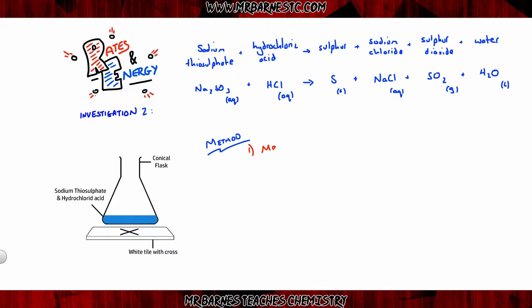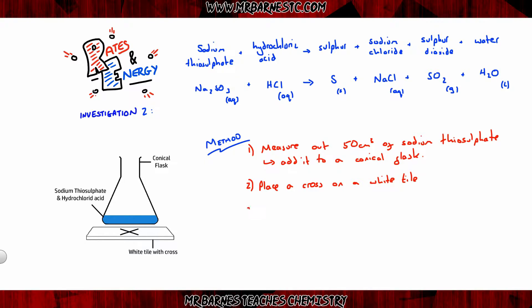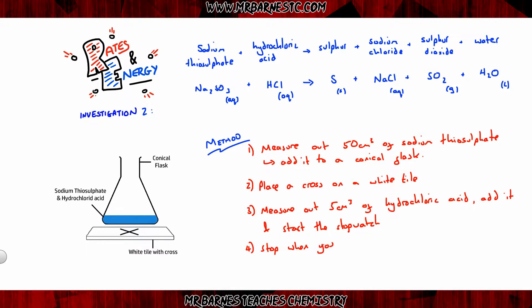For the method, measure out 50 cm³ of sodium thiosulfate and add it to a conical flask. Place a cross on a white tile, then measure out 5 cm³ of hydrochloric acid and add it to the conical flask and start your stopwatch. Stop the stopwatch when you can no longer see the cross — make sure you look down from the top. The two things you can investigate here are concentration and temperature.